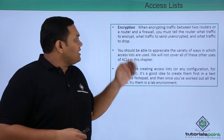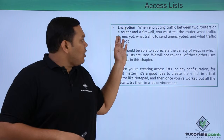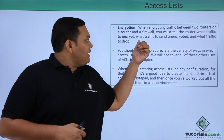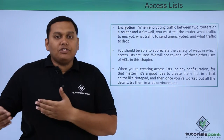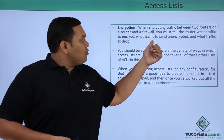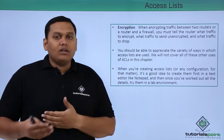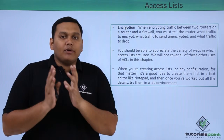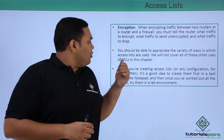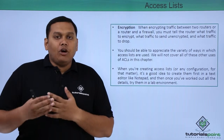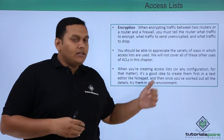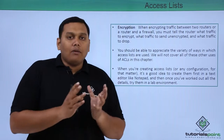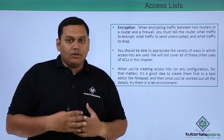For encryption, when encrypting traffic between two routers or a router and a firewall, you must tell the router which traffic is to be encrypted, which traffic is to be sent unencrypted, and what traffic needs to be dropped — all controlled by the access control list. When creating or configuring an access control list, it is a good idea to create it on a notepad first and then apply it in your lab or your environment.